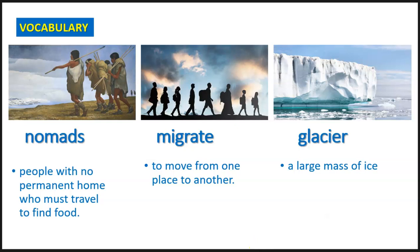So those are our three words: nomads — people with no permanent home who must travel to find food; migrate — to move from one place to another; and glacier — a large mass of ice.